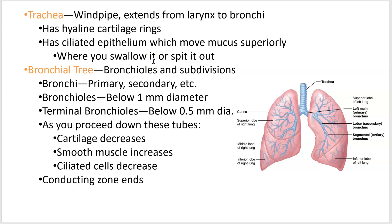Then we move on to your trachea or windpipe, which has very noticeable hyaline cartilage rings around it. The epithelium on the inside is pseudo-stratified ciliated columnar epithelium — you'll get that in lab — but suffice it to say the epithelium is ciliated. You produce mucus in the trachea and move it upward toward the throat. Mucus from the nasal cavity is also moved back to the throat, where you can either swallow it or spit it out. The mucus is there to catch pathogens brought in.